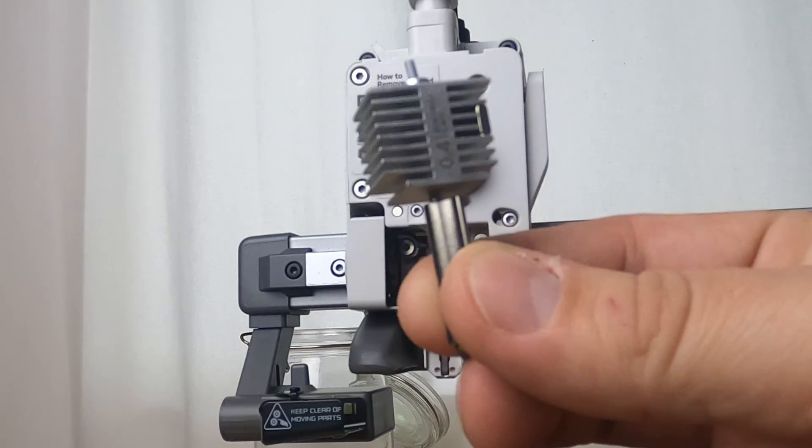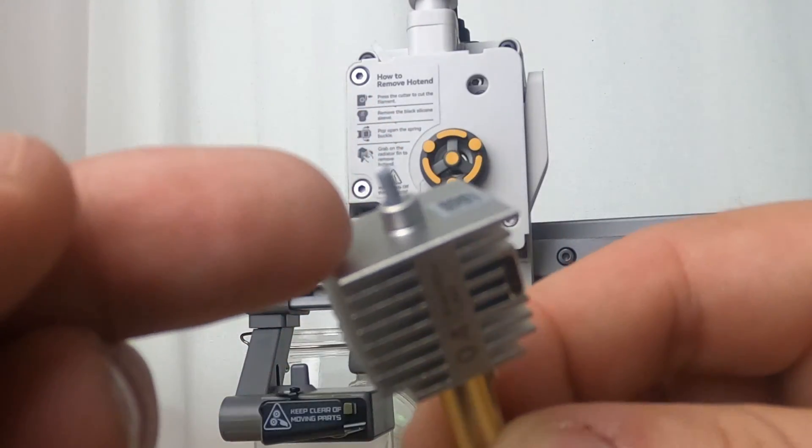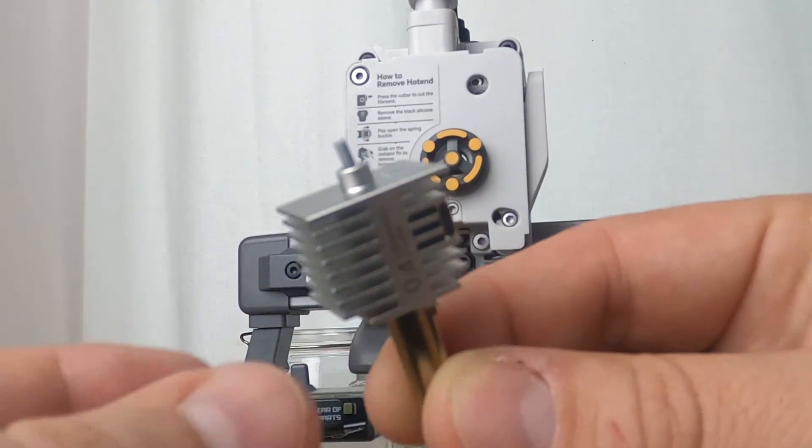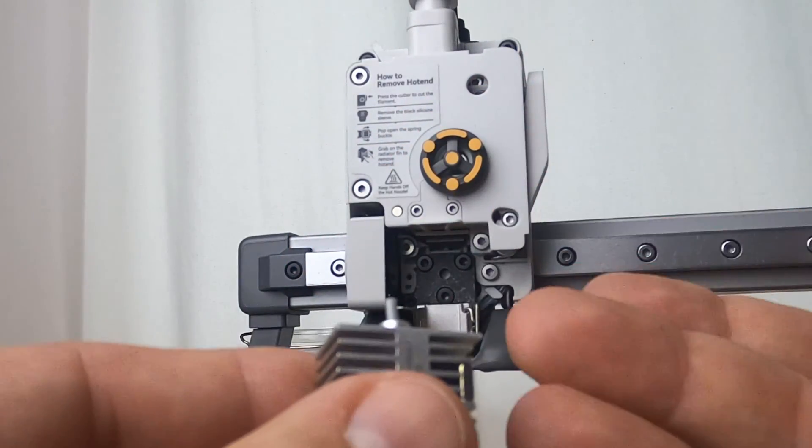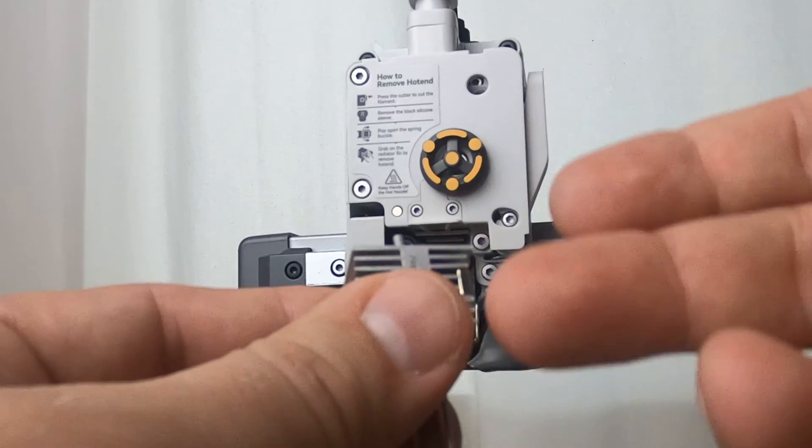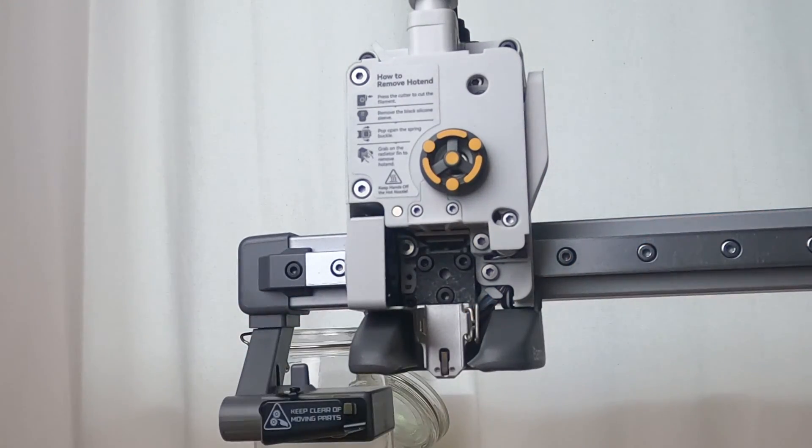And here is the old nozzle. You'll notice that you have a little bit of filament sticking out at the top. That's fine. You don't need to cut it. You don't need to remove it. That can stay there if you'd like. This little bit of filament always gets purged out every time you do a new print. So I'll set that aside.